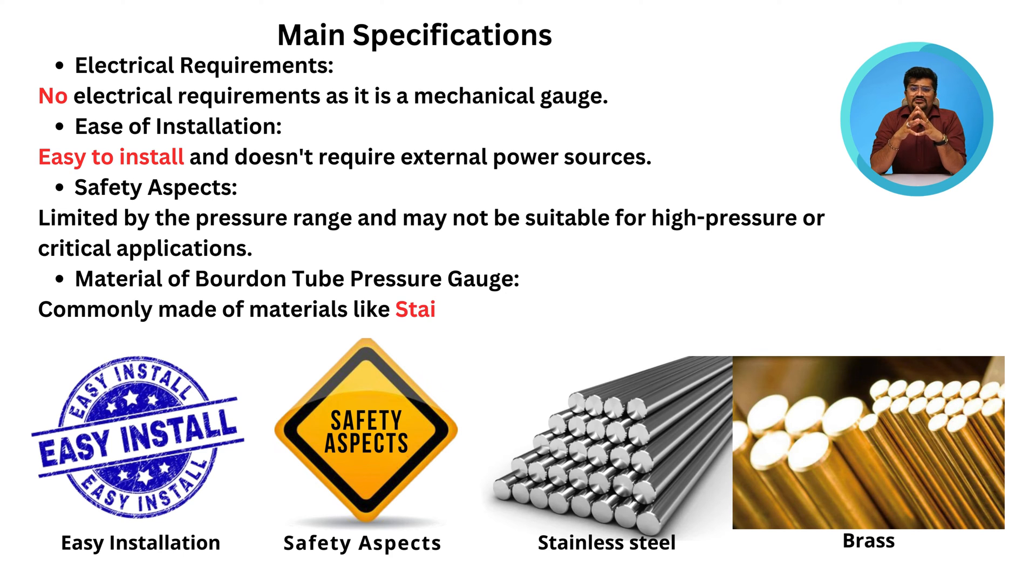Main materials used for bellows pressure gauges include steel, brass, and stainless steel.